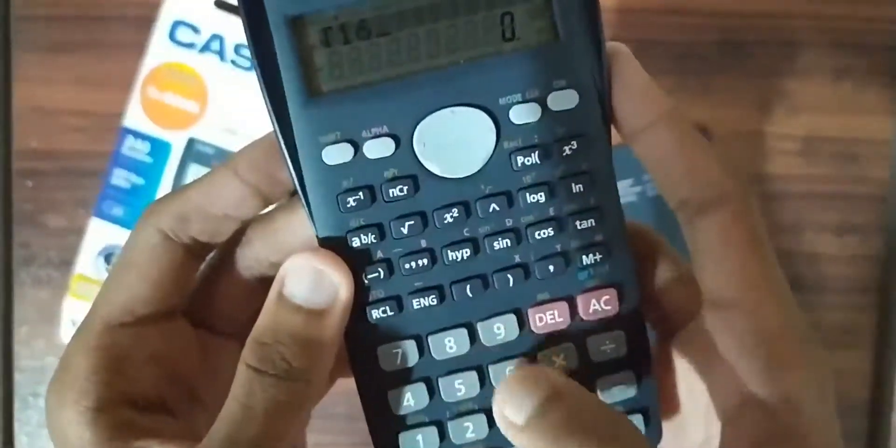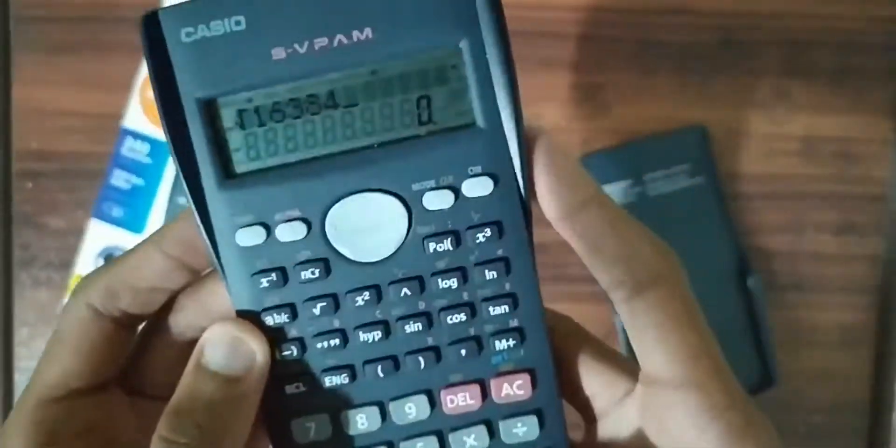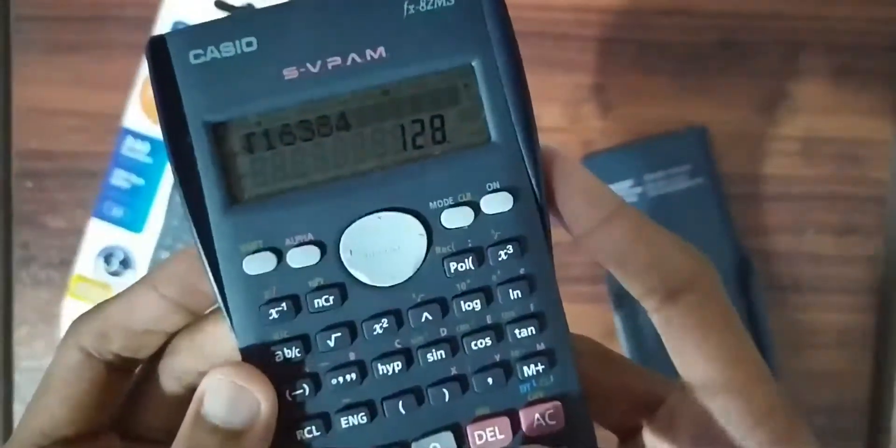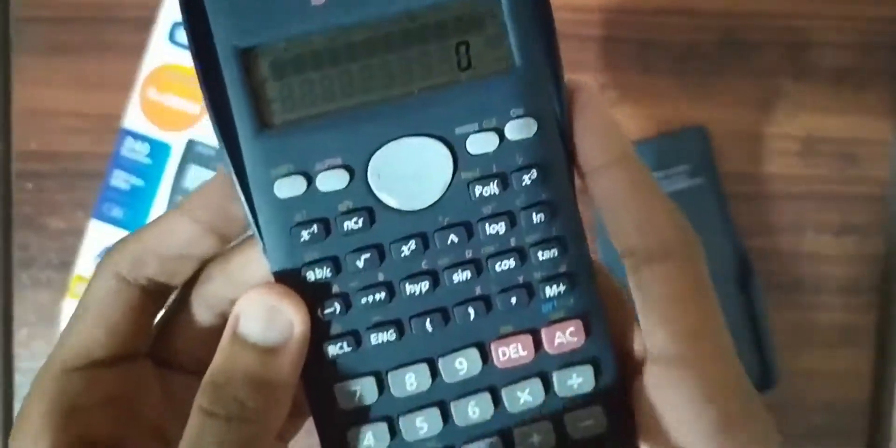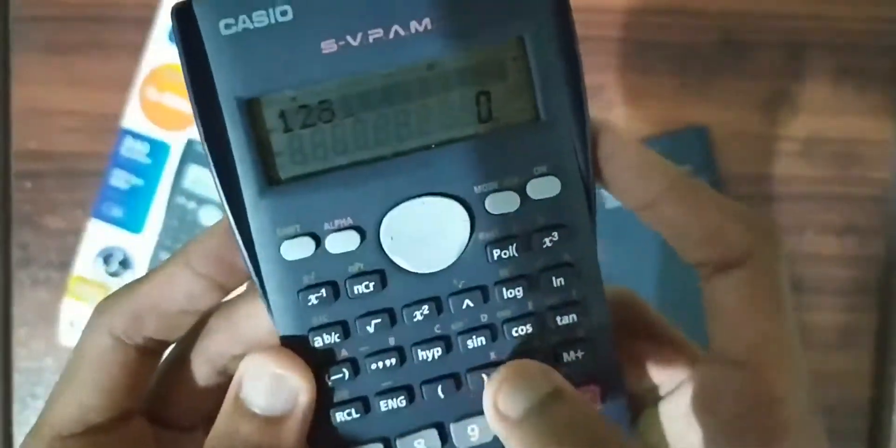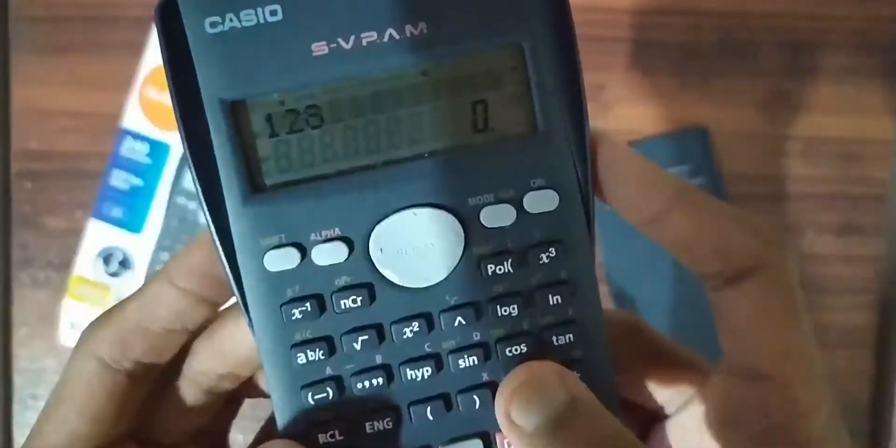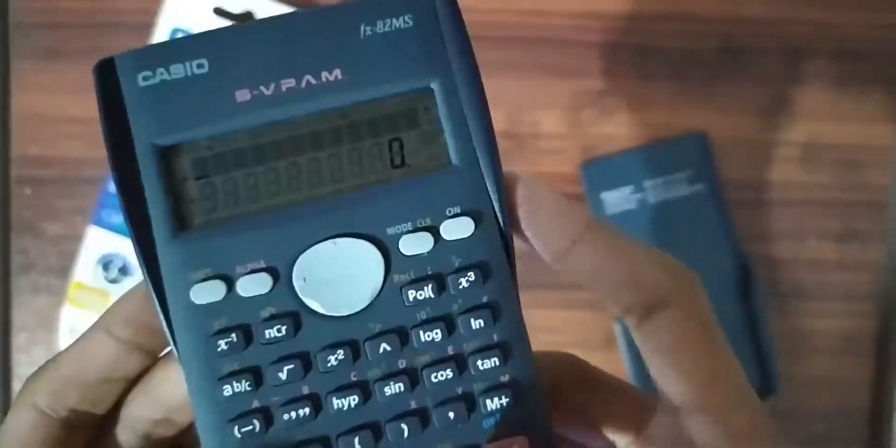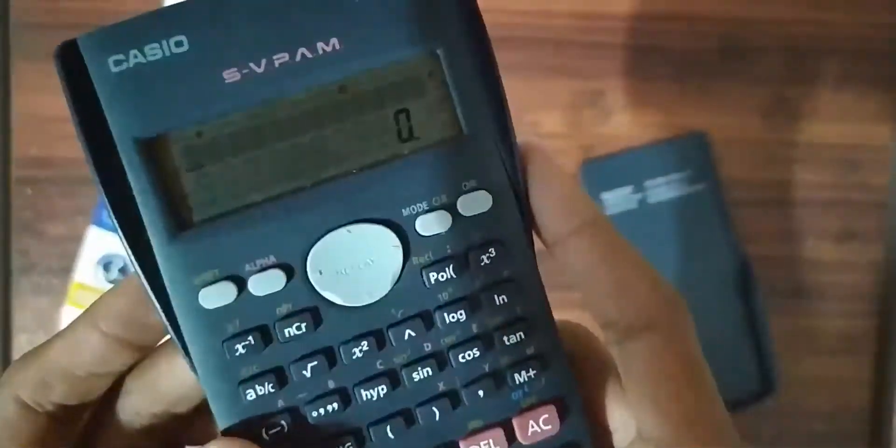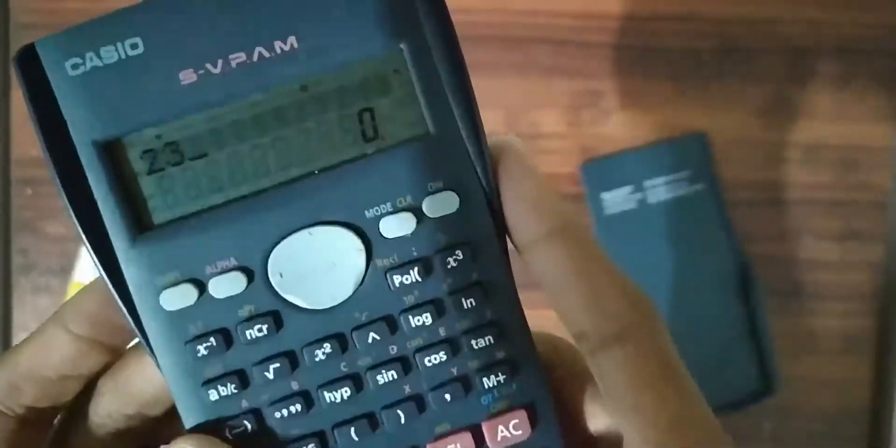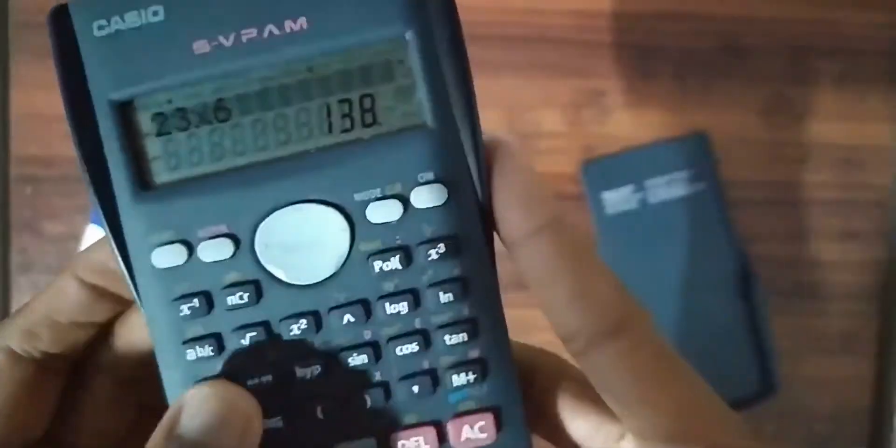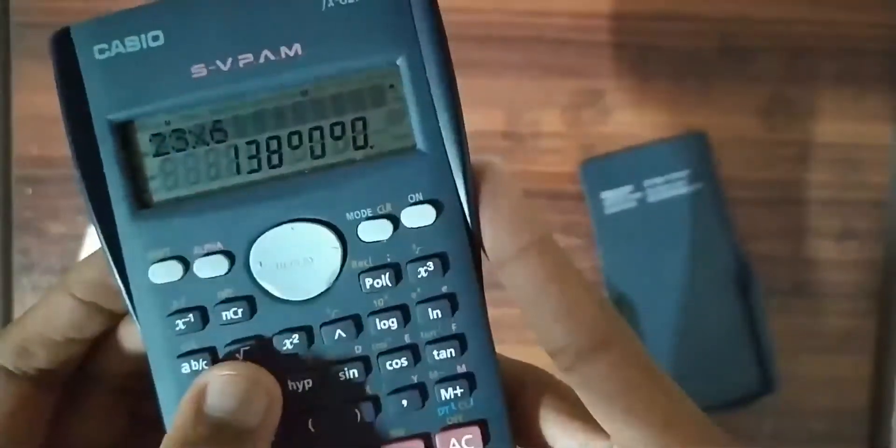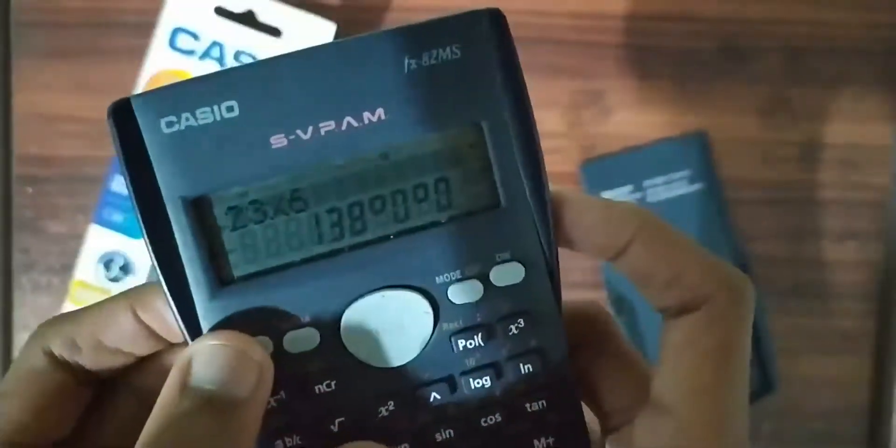Now let's check square root of 16384. The correct answer is 128. Yes, it's correct. Now let's reverse calculate. It's correct. It can show values in different forms also.